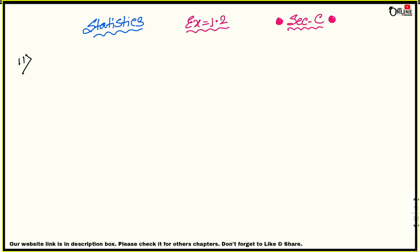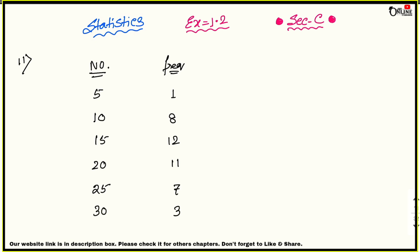Sum number 11: Calculate the median of the following distribution. The data given is: Number and its corresponding Frequency — Number 5 frequency 1, Number 10 frequency 8, Number 15 frequency 12, Number 20 frequency 11, Number 25 frequency 7, Number 30 frequency 3. First, I need to find the cumulative frequency (CF). CF means cumulative frequency.